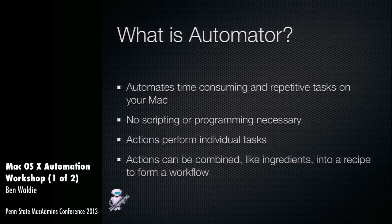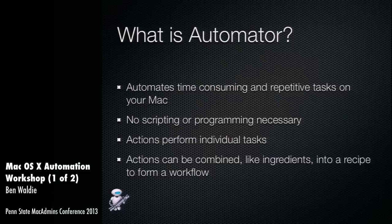In Automator, you have what are called actions. Each action is a pre-built automated function that does something — maybe it creates an email, makes a file on the desktop, or creates a folder somewhere. You piece these actions together like ingredients to form a workflow, which is like a recipe. Then you can run that workflow to perform those tasks whenever you want. A lot of Automator workflows are very simple, just maybe one or two actions, but people do build pretty complex ones.